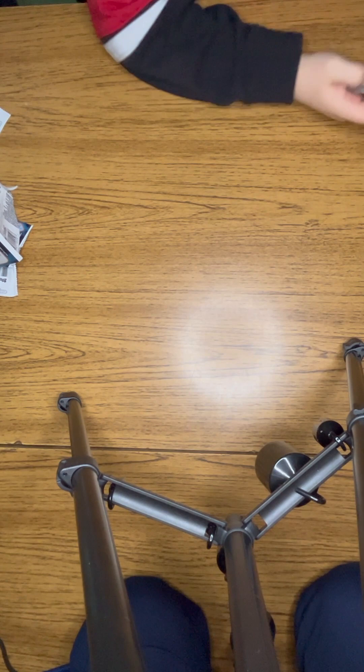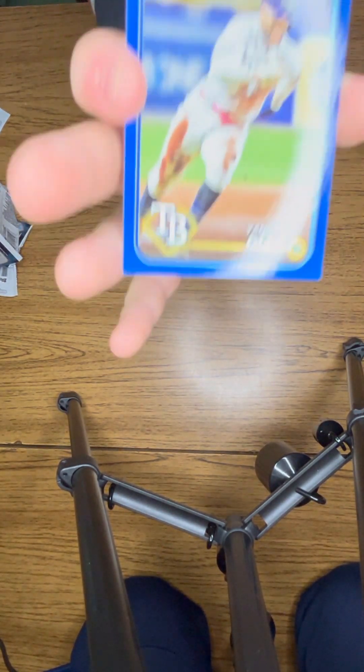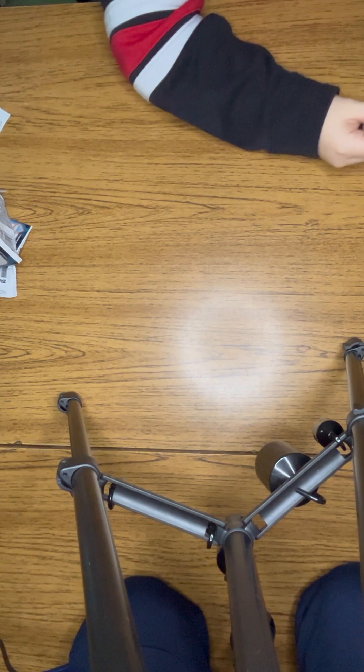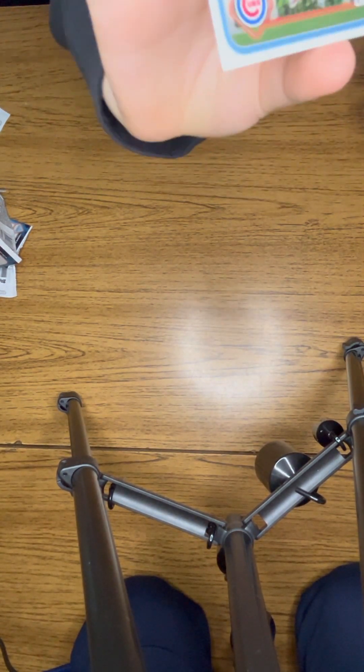A Max Muncy from the Dodgers, a Jacob deGrom Rangers, a Yandy Diaz from the Rays, a Star of the MLB Pete Alonso, and a National League Chicago Cubs card.